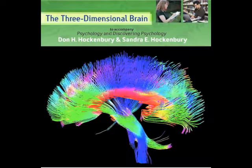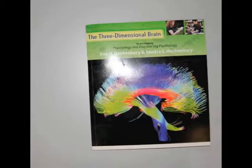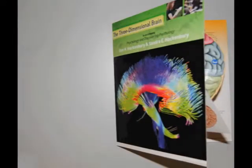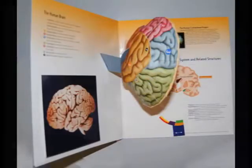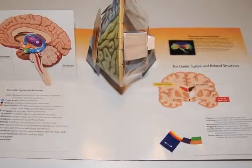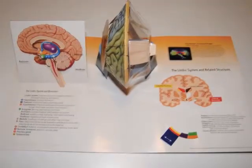To announce a unique addition to the Hockenberry & Hockenberry Psychology Supplements Package: a three-dimensional brain model that is available to be bound for free with any version of the text. Unfolding to allow students to study the positioning of brain structures from different angles, the three-dimensional brain model is a groundbreaking study tool that will help students at all levels understand the brain's physiology and its relation to human behavior.